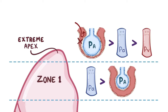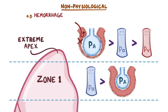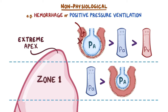Normally, the structure of blood vessels and alveoli allow them to resist completely collapsing, so this only happens in non-physiologic conditions — like when pressure in the arterioles decreases drastically, such as during a hemorrhage, or when pressure in the alveoli increases drastically, like during positive pressure ventilation. During these times, the pressure in the alveoli can crush the capillaries and completely cut off blood flow, creating dead space.